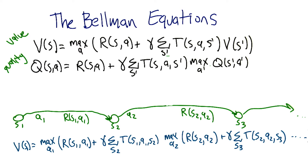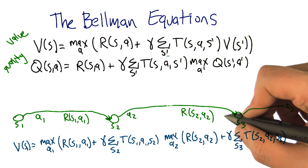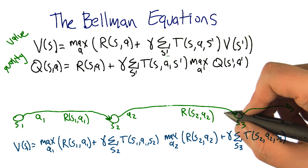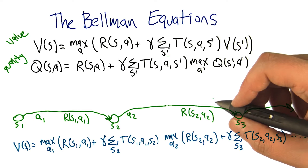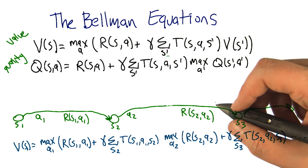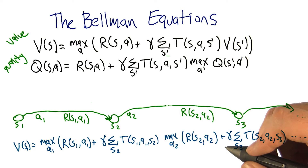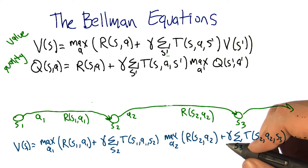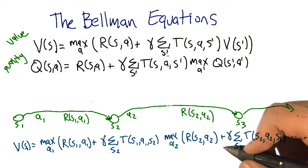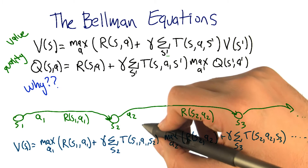I have two questions. The first is: why are we bothering to create this quality function when the value function worked just fine? I'll ask the second question after you give me a satisfactory answer to the first one. So why?